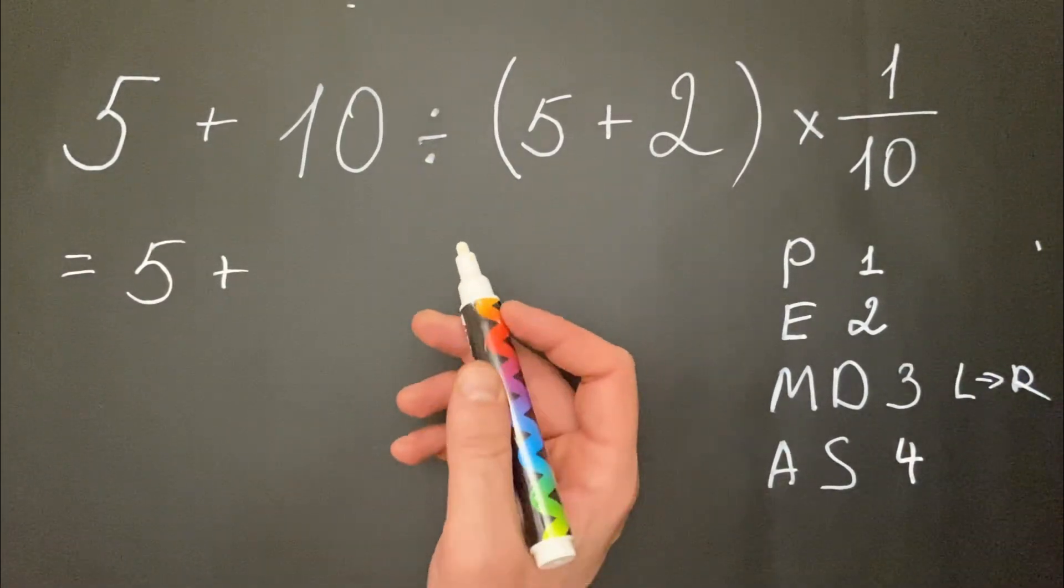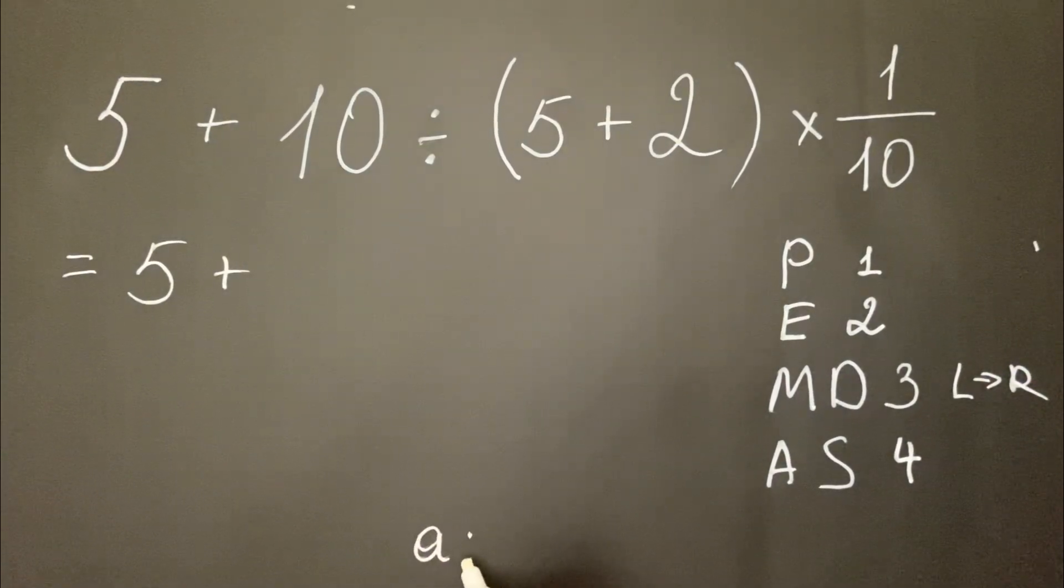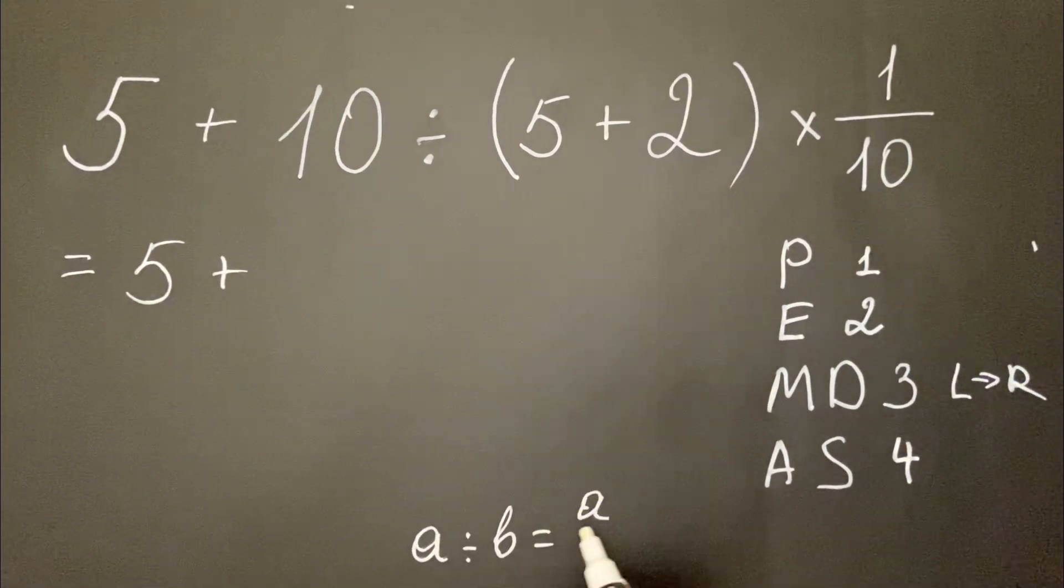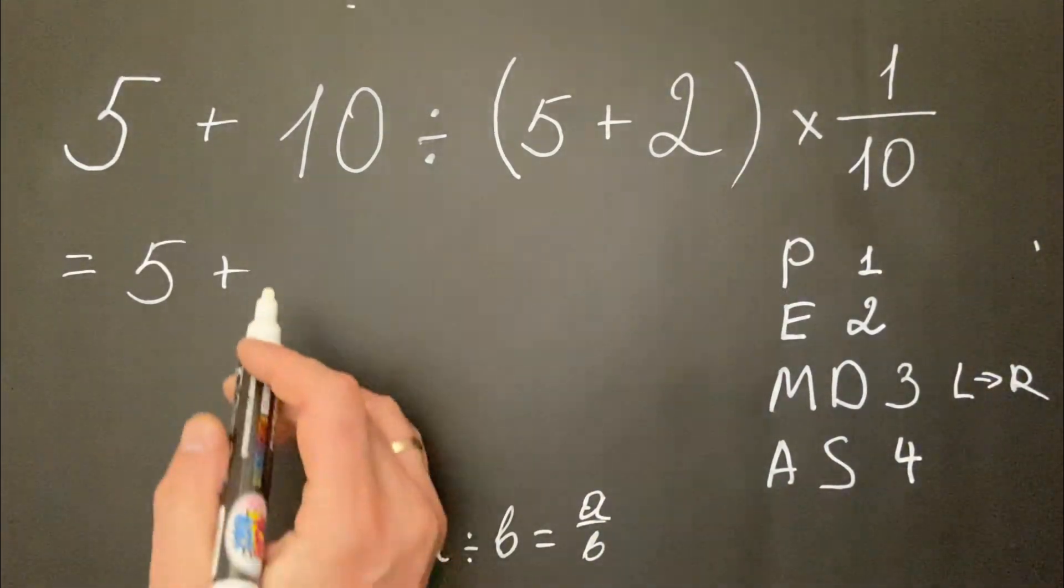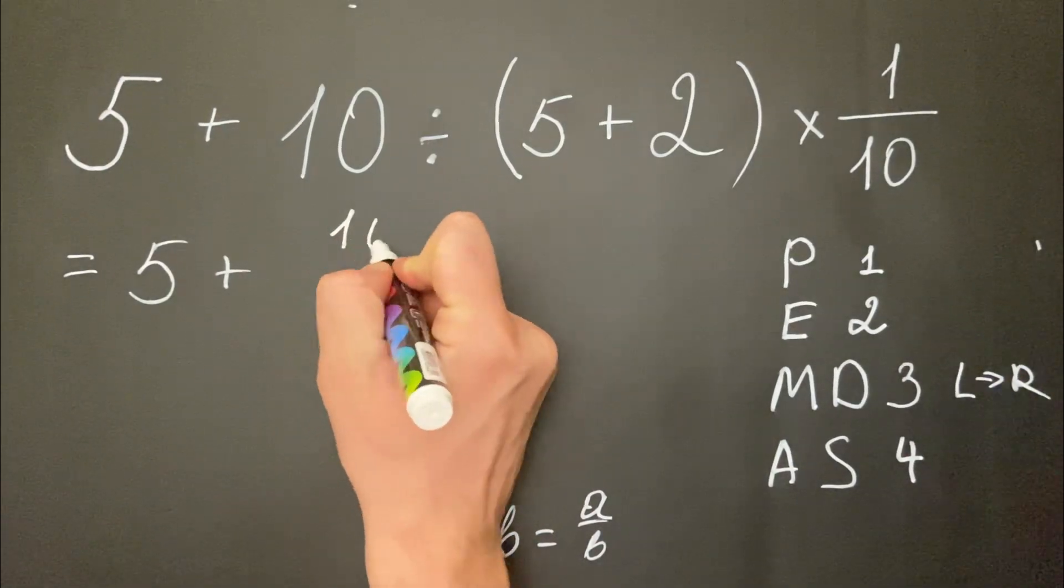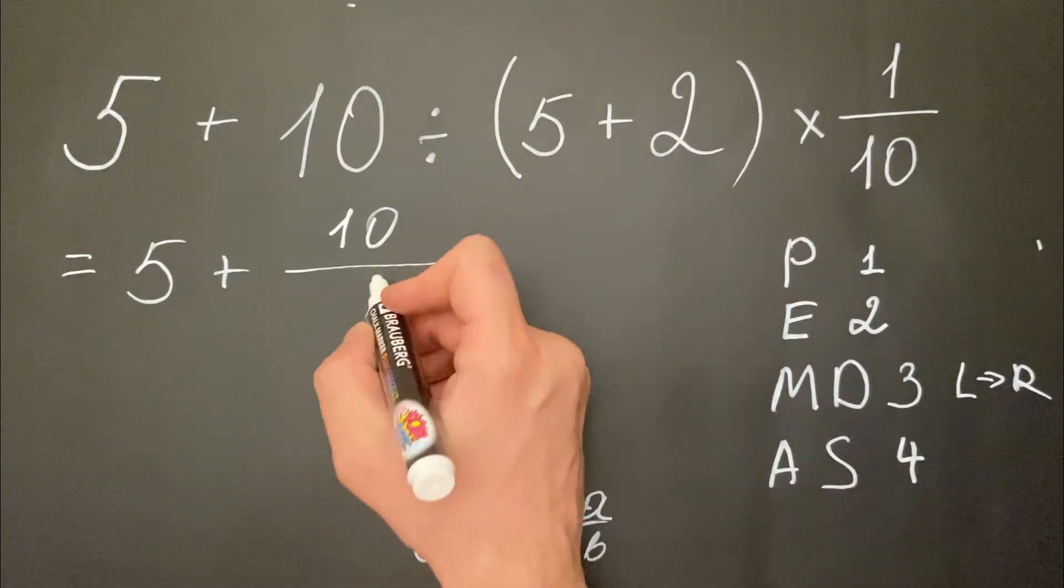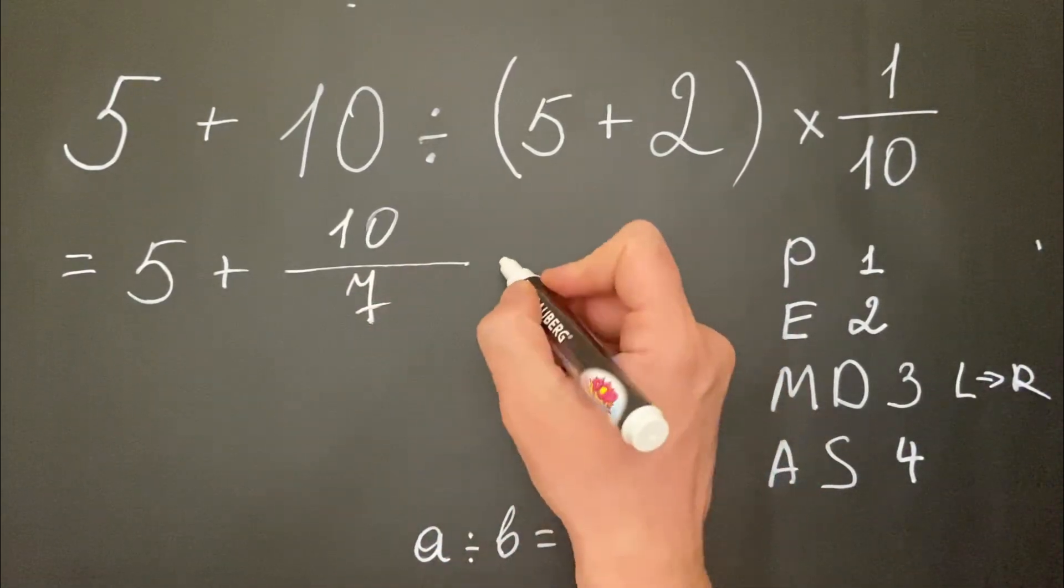If we have a divided by b, we can write it as a over b. So here we have 10 over 7, since 5 plus 2 is 7, multiplied by 1 over 10.